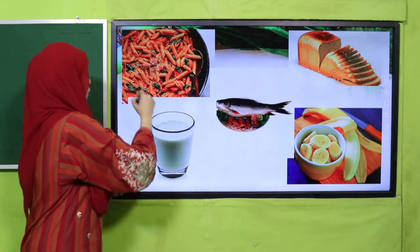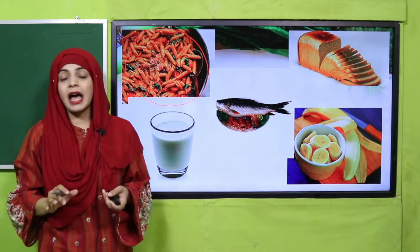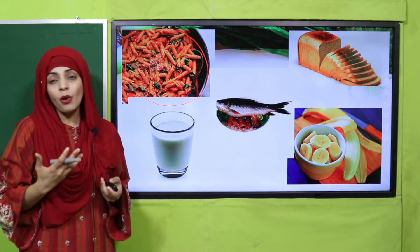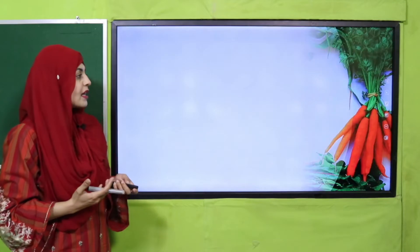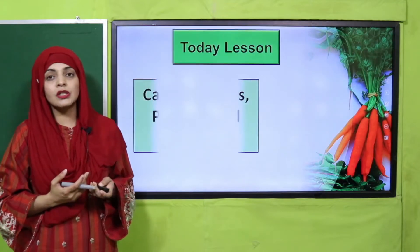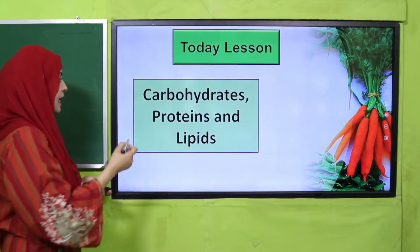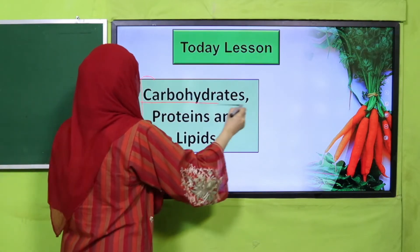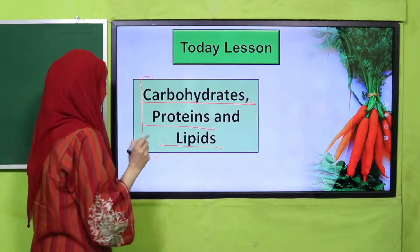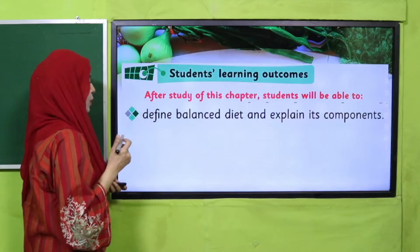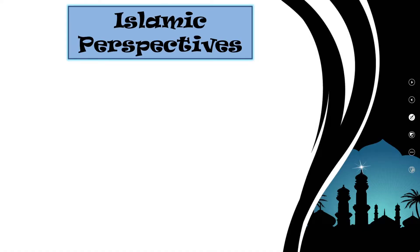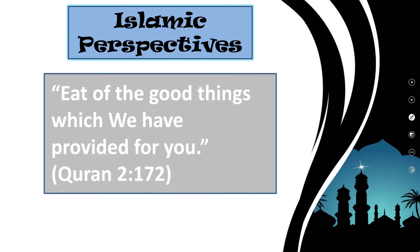Now let's move forward towards today's lesson. As I told you, we will discuss three important components of a balanced diet: carbohydrates, proteins, and lipids. The student learning outcome is to define balanced diet and explain its components. Let's quickly look at the Islamic perspective: eat from the good things which we have provided for you.